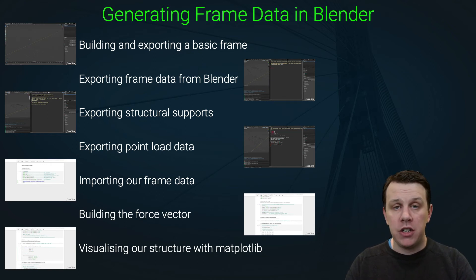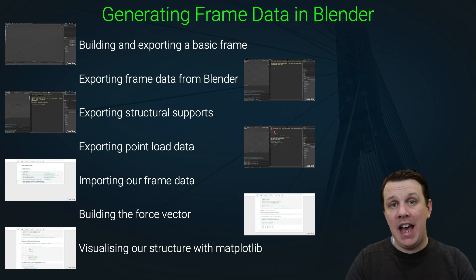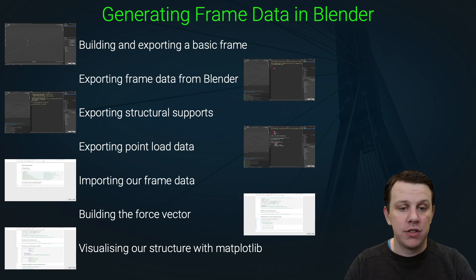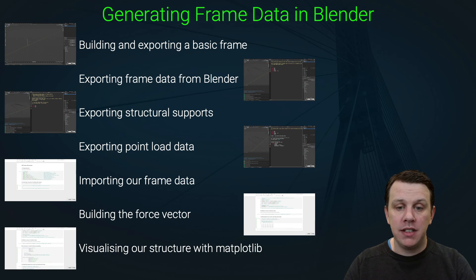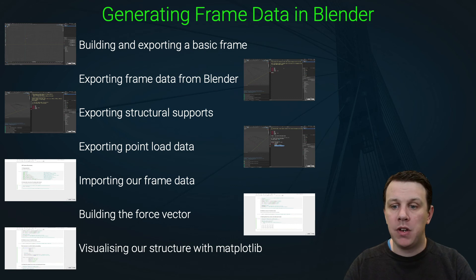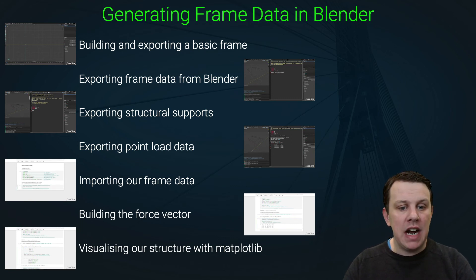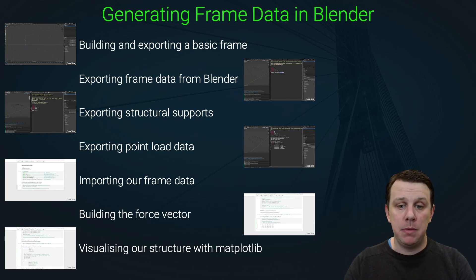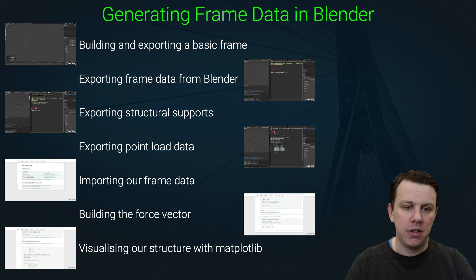Once we get the data out of Blender, we need to get it into our notebook. We're going to write some code within our main solver notebook to bring the data defining our model from CSV files into the notebook. Once we've got our data loaded up we can start working on the solver itself, beginning by building the global force vector based on the positions we specified for point loads over in Blender.